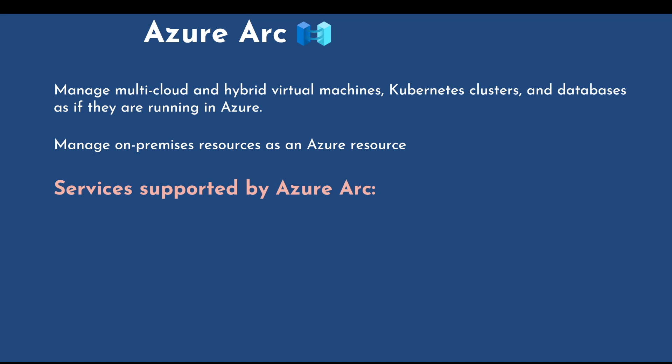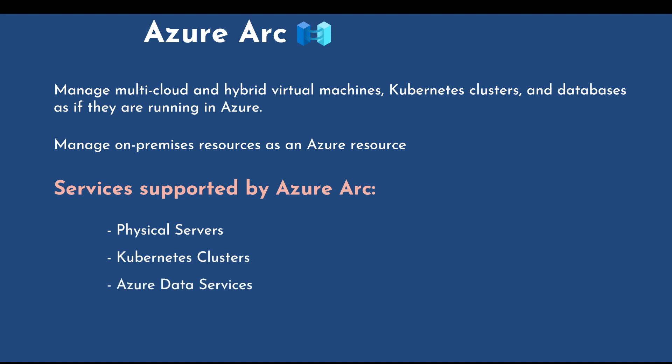The services supported by Azure Arc are physical servers, Kubernetes clusters, Azure data services, SQL Server, and virtual machines. Anything running on-premises from these supported services can be managed by Azure itself and can be turned into an ARM template for infrastructure provisioning.